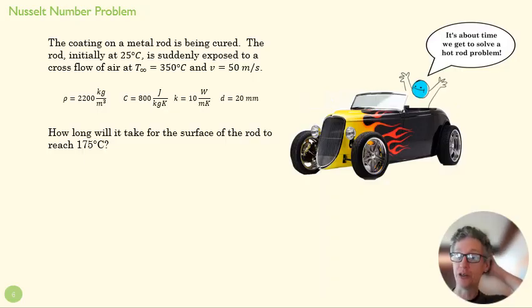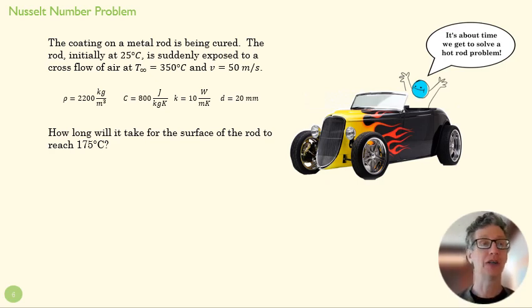In this one, we're actually going to do an external flow problem. We've got a metal rod that is being cured. It's at a certain temperature and suddenly exposed to a fairly violently flowing cross flow of air at 50 meters per second, which is really fast. We want to know how long it's going to take for that surface of the rod to reach a certain temperature.